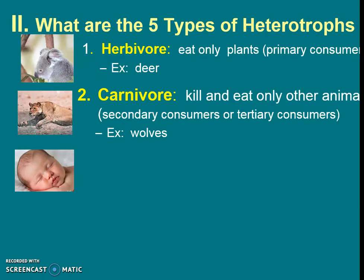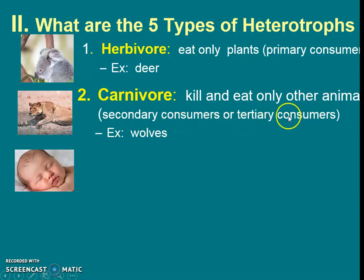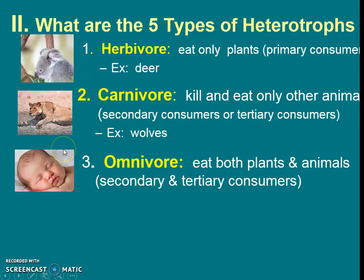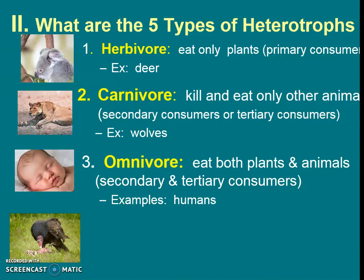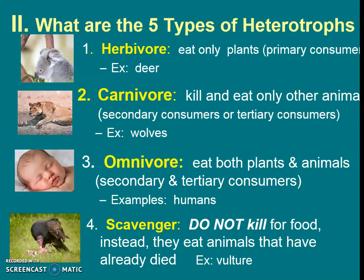We also have carnivores — notice the prefix 'carny,' and herbivore has the prefix 'herb' that means plants. Carny sounds like meat, so this one only eats meat or other animals. It is a secondary or tertiary consumer. If we think about our food web, wolves and lions are carnivores. We are omnivores, meaning we eat both plants and animals — we can be secondary or tertiary consumers. Humans, pigs, and bears are examples. Then there are scavengers — they don't kill their food; instead, they eat animals that have already died. Examples include birds of prey and possums.